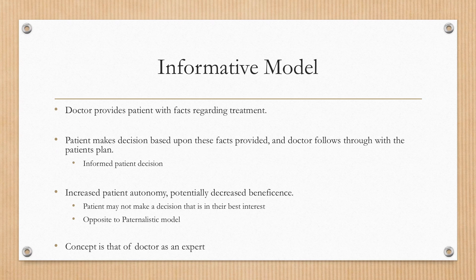The informative model is where the doctor provides the patient with facts regarding their treatment. The patient then makes a decision based upon these facts and the doctor follows through on their wishes. Therefore, it's an informed patient decision. This promotes patient autonomy but decreases beneficence, because patients may not make decisions that are in their best interest. Therefore, it's in contrast, or opposite, to the paternalistic model. In this case, the doctor is seen as an expert.